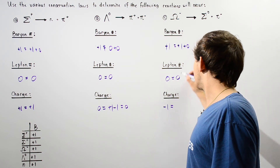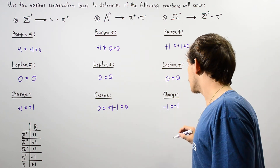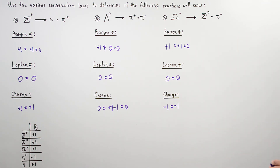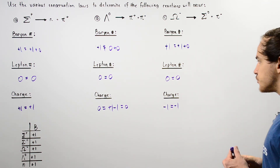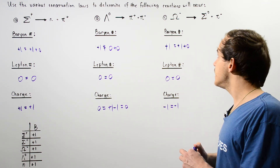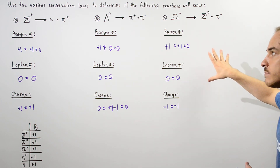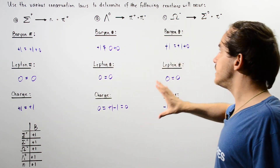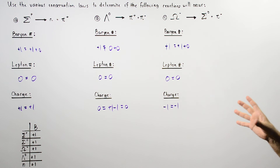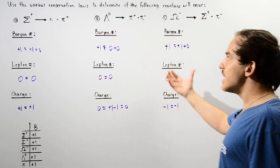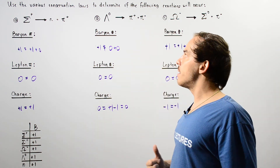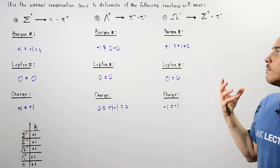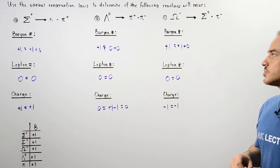Because all conservation laws are satisfied and we're assuming momentum and energy are also conserved, we see that C will take place and A will take place, but B does not take place — primarily because the baryon number is not conserved in that particle interaction.